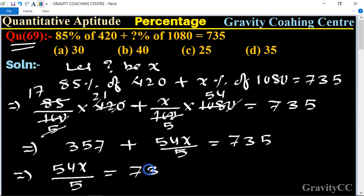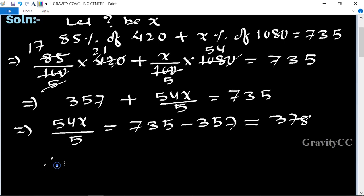So 54x upon 5 is equal to 735 minus 357, which equals 378. Therefore x is equal to 378 into 5 upon 54. Now we cancel by dividing by 6: 54 and 6 gives 9, 6 gives 36 and 6, 3 gives 18 and 9, 7 gives 63.